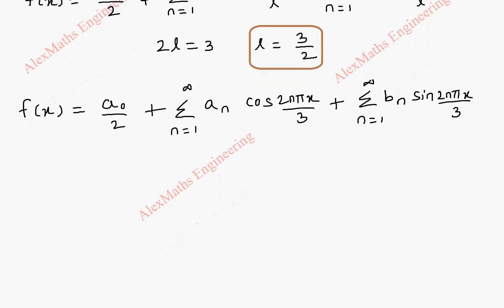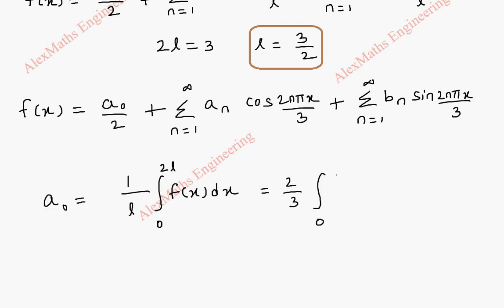Now, to find a0, we are going to use the formula 1/l · integral from 0 to 2l of f(x) dx. Using l = 3/2, this will become 1/(3/2), which is 2/3 · integral from 0 to 3 of f(x) dx.